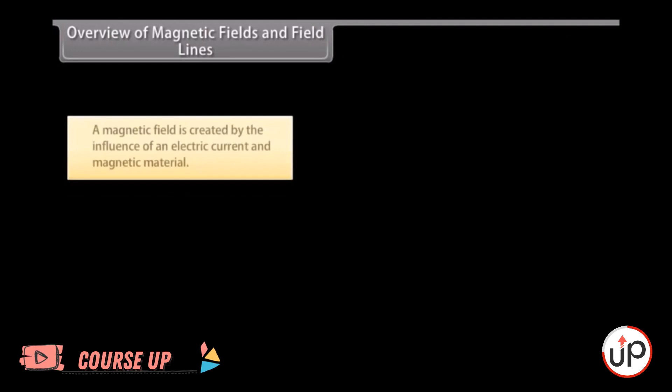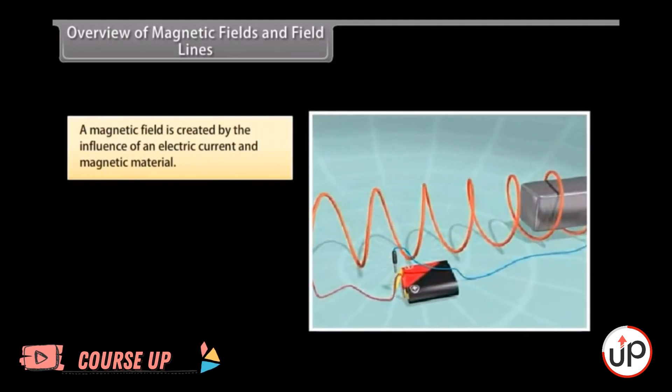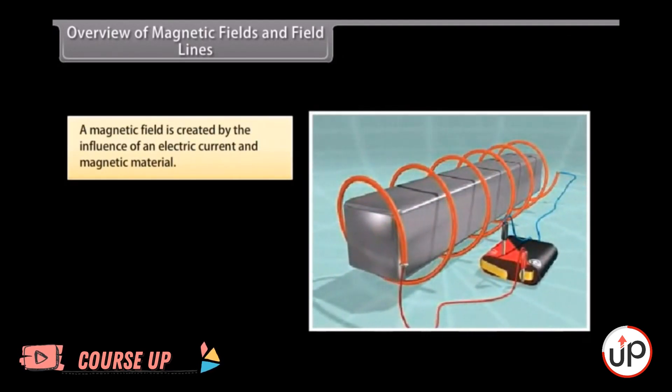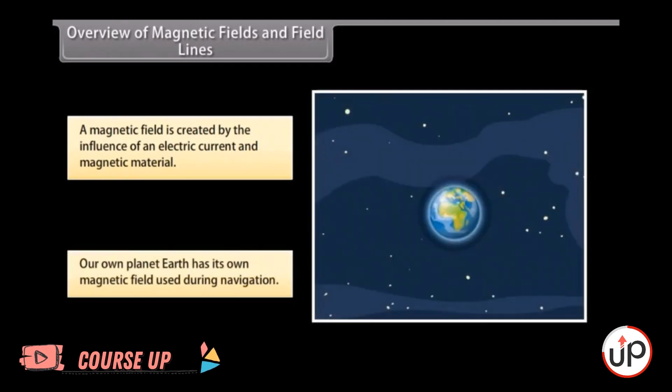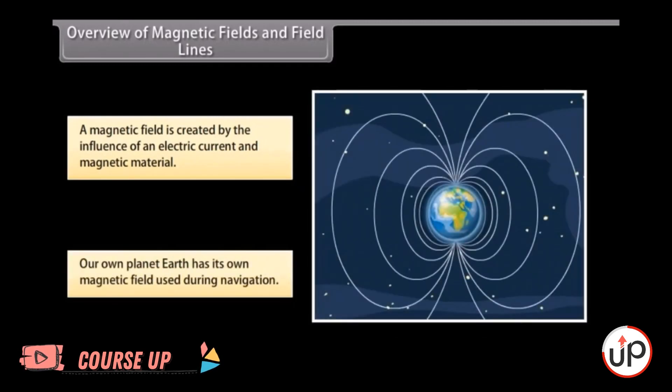Overview of magnetic fields and field lines. A magnetic field is created by the magnetic influence of an electric current and magnetic material. Our planet Earth produces its own magnetic field, which is an important factor during navigation.